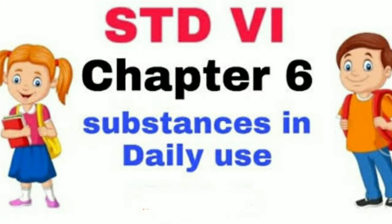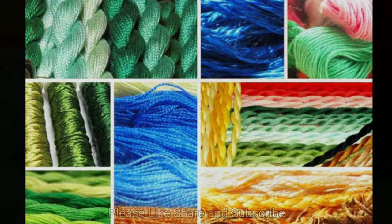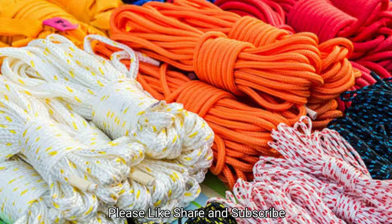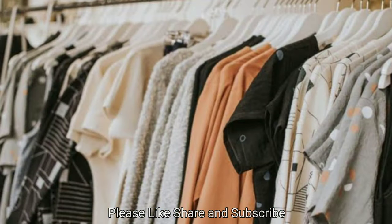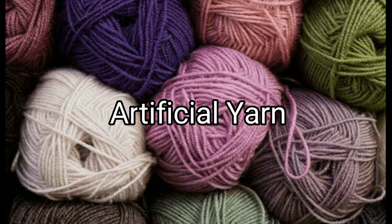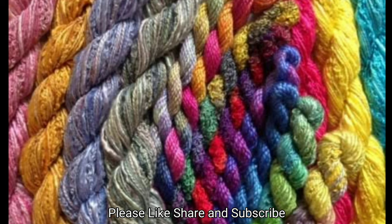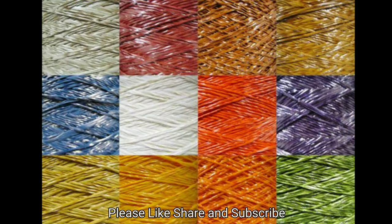General Science Standard 6, Chapter 6: Substances in Daily Use. Synthetic Fibers or Threads — can you tell from which substances in nature we can get threads or fiber? What are clothes made from? From the time it was first thought that artificial yarn could be produced to meet the clothing needs of an increasing population, much research and progress has taken place in this field. Innumerable kinds of synthetic or artificial threads are now available.